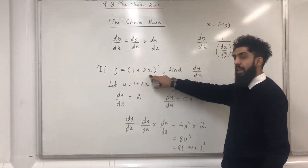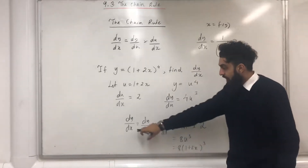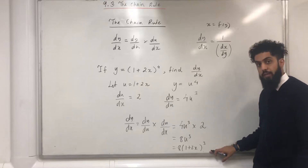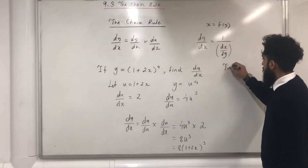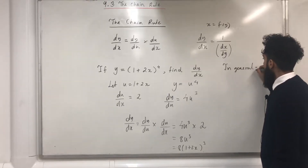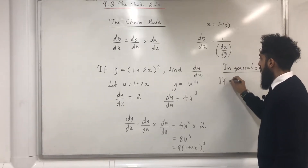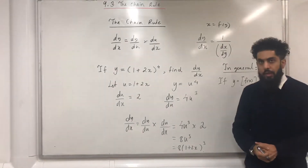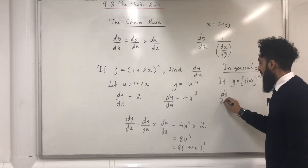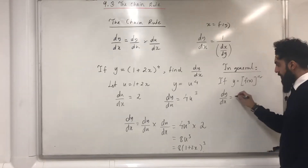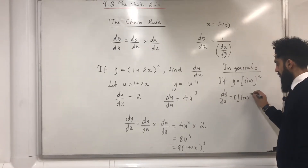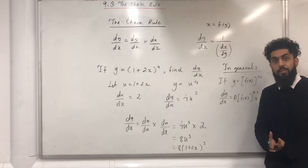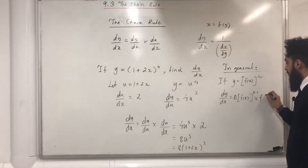If y equals (1 plus 2x) to the power of 4, then dy over dx using the chain rule is 8(1 plus 2x) to the power of 3. In general, if y equals [f(x)] to the power of n, then dy over dx is given by bringing down the power n, subtracting 1 from the power, and multiplying by the derivative of f(x) — that is f dash of x. That there is the general rule.